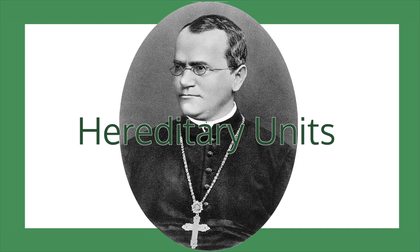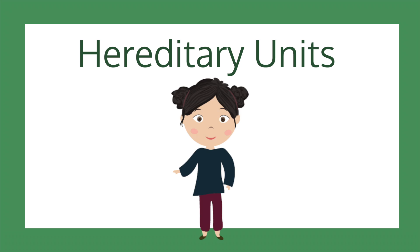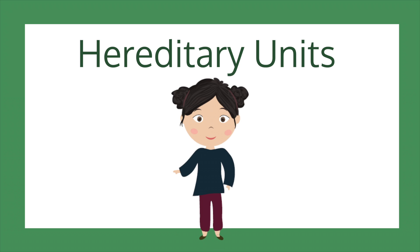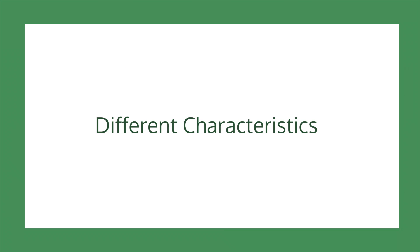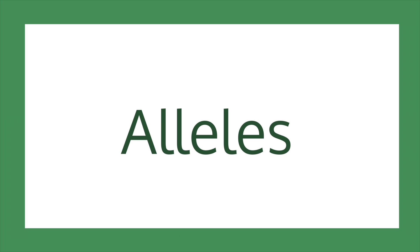These factors we now call hereditary units. Hereditary units determine if we have brown hair or blonde hair, or are tall or short. These different characteristics require different hereditary units. These differing units are known as alleles.